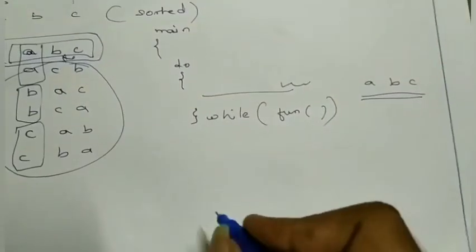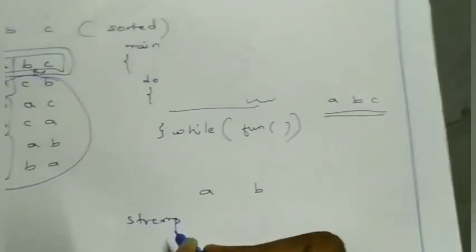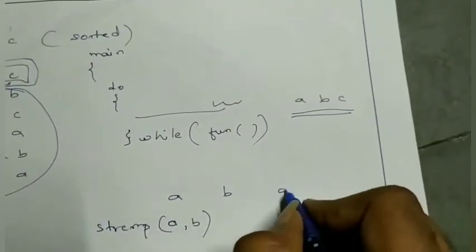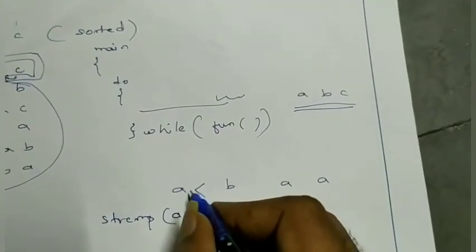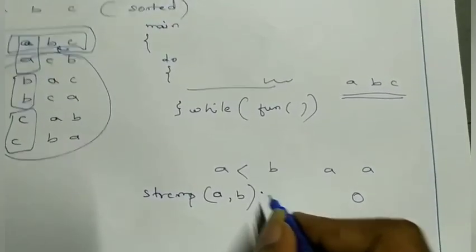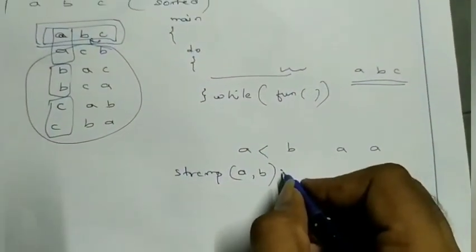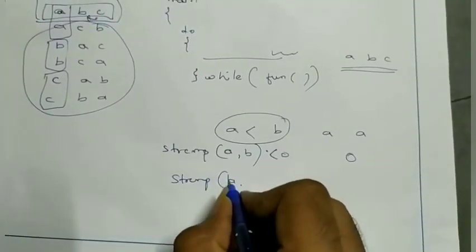Using str_compare of a and b: if a equals a, it will be zero. If a comes before b in the dictionary, its value will be negative — less than zero. If a comes after, the value will be positive. So that is how str_compare works, and we are using it here in the code.